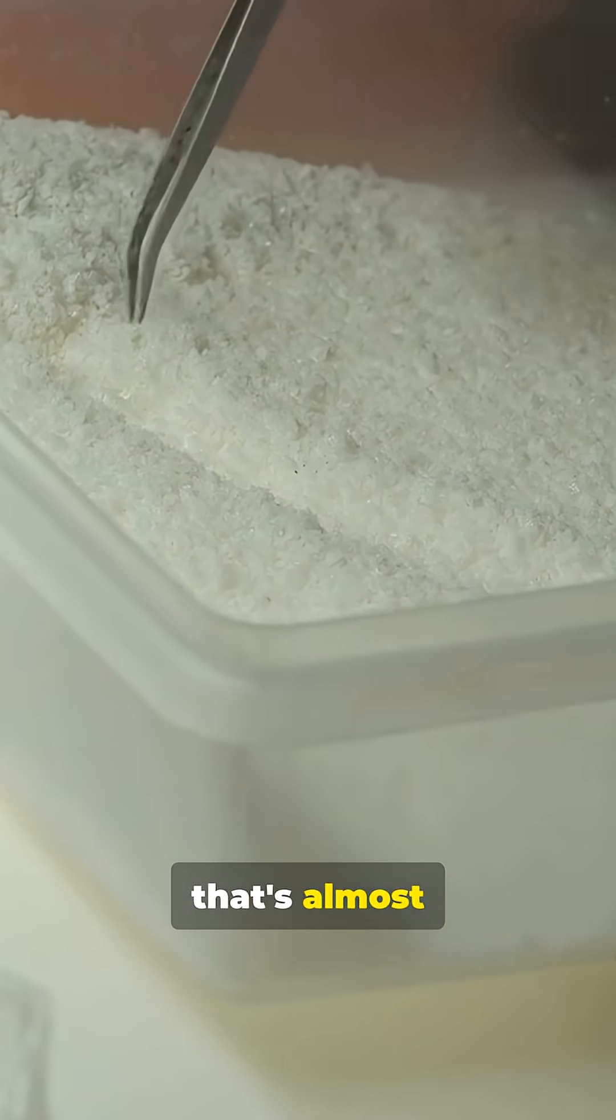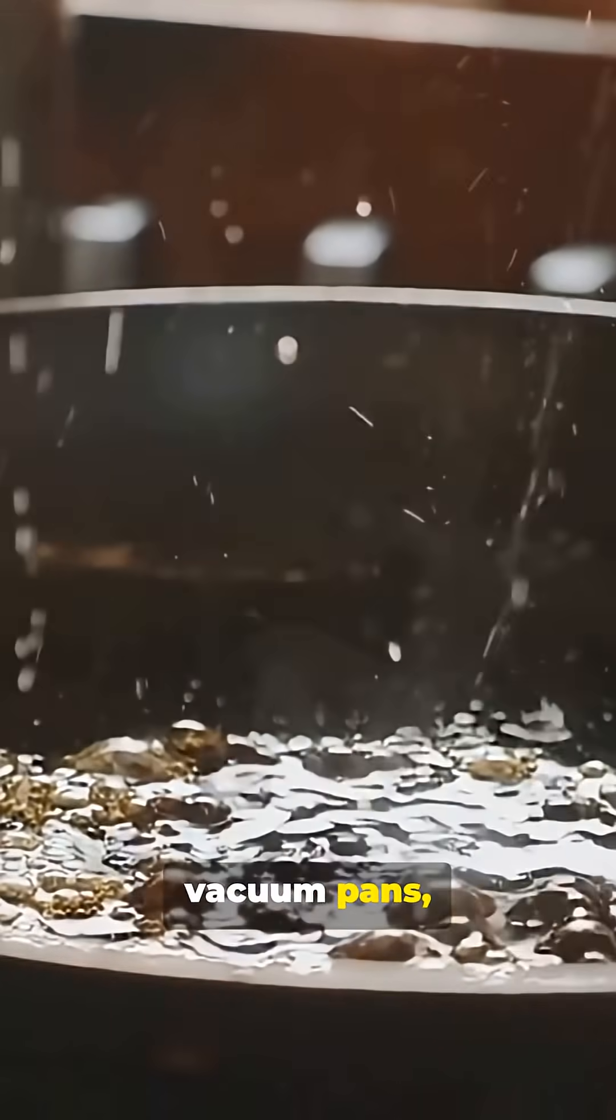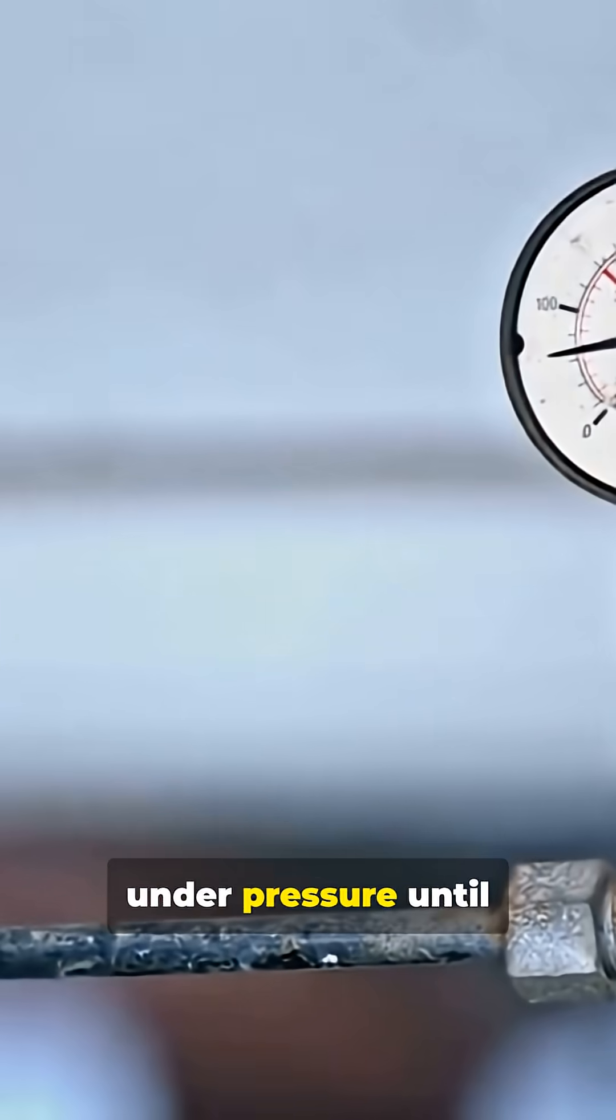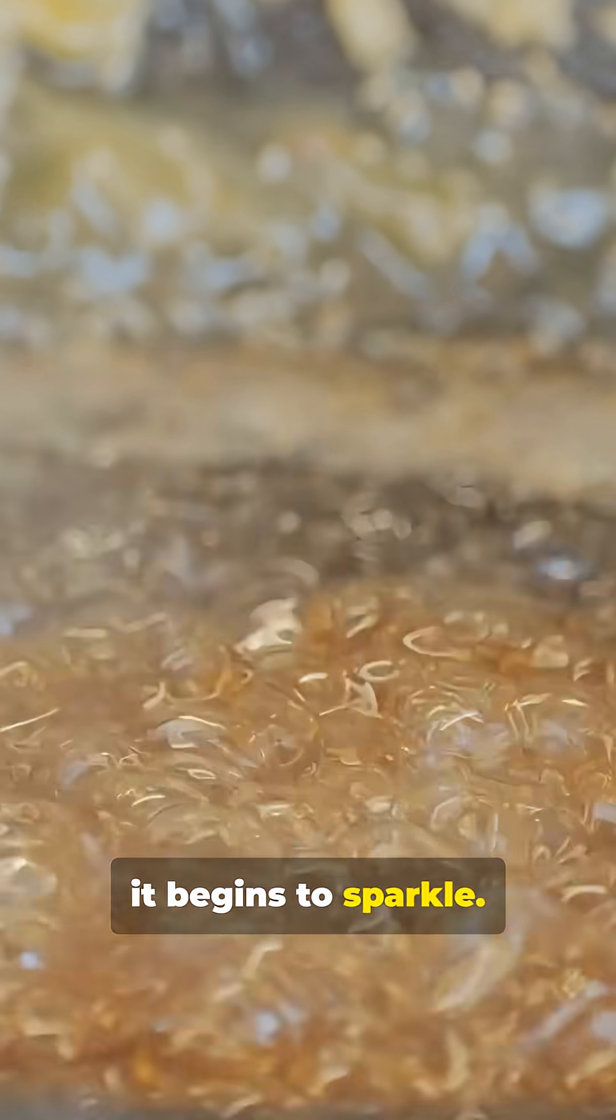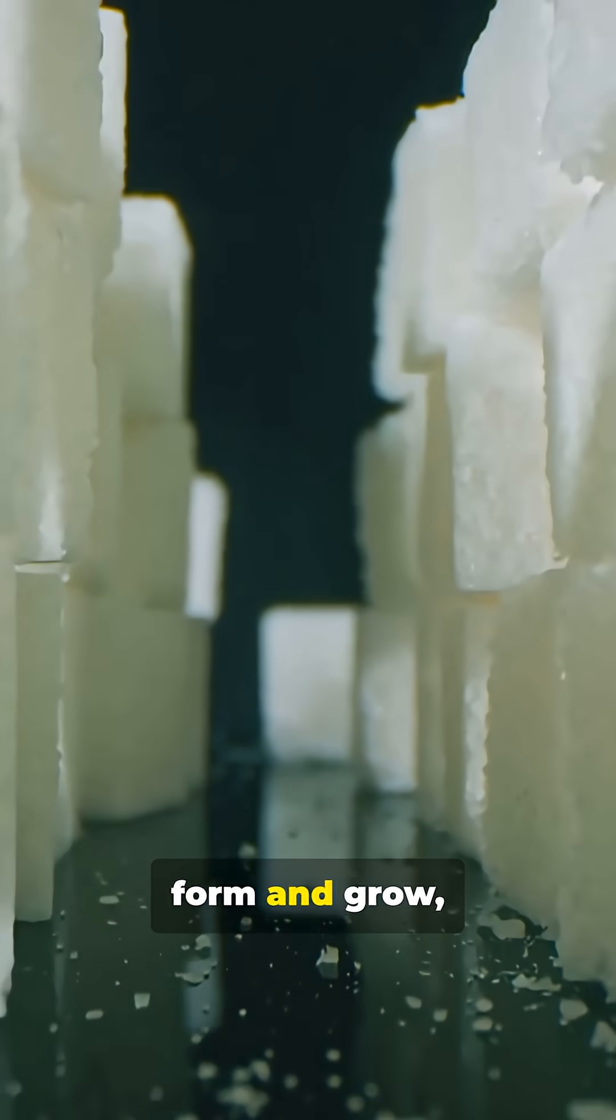Next comes the part that's almost hypnotic: crystallization. Inside massive vacuum pans, the syrup is cooked under pressure until it begins to sparkle. Tiny sugar crystals form and grow.